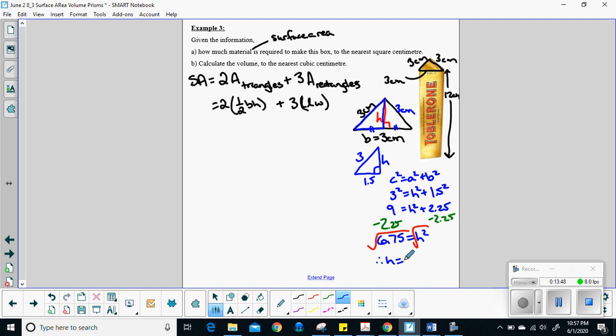6.75 equals H squared. Let's square root both sides to get rid of the square. So H is going to be equal to 2.6 centimeters. So I now have a base. Good. I now have a height. Good. So let's pop those in before we get lost here.